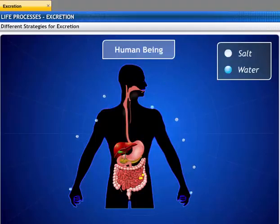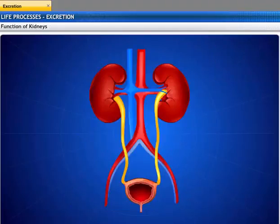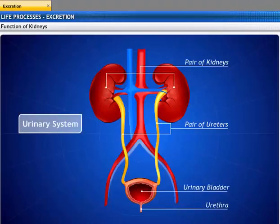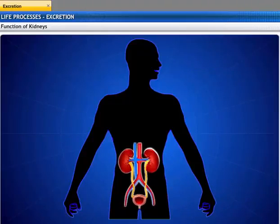This regulatory mechanism is called homeostasis. The excretory system in human beings includes a pair of kidneys, a pair of ureters, a urinary bladder, and a urethra. This is referred to as the urinary system.